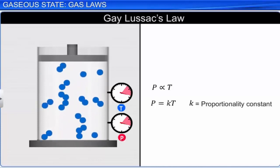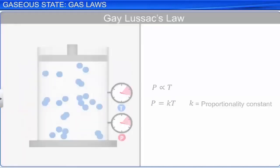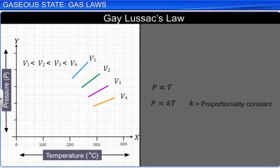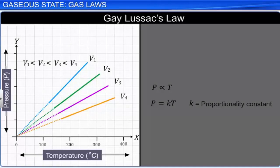This law can also be derived by combining Boyle's law and Charles' law. If we plot pressure versus temperature for a given volume of a gas, we get straight lines corresponding to each volume. These lines are called isochores.